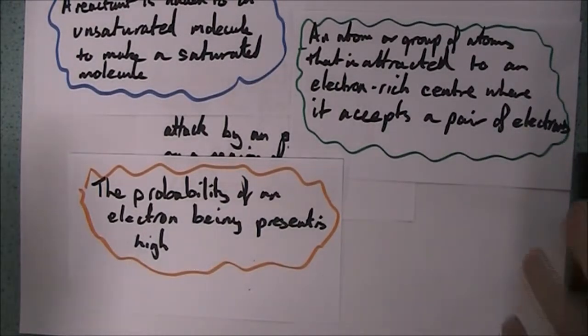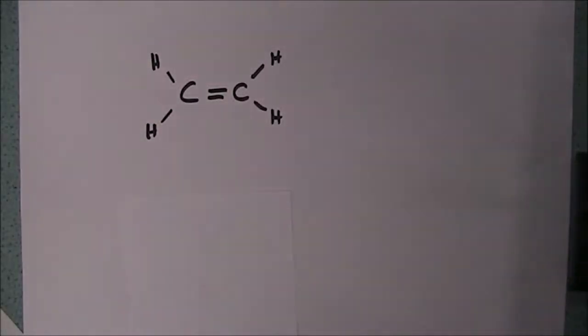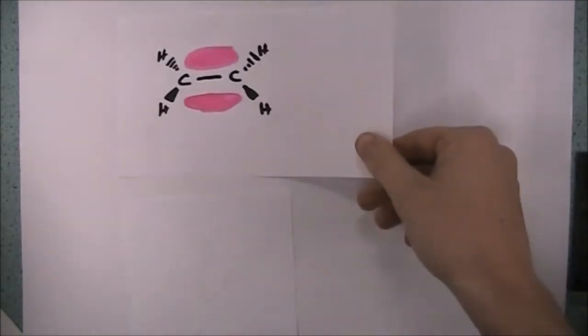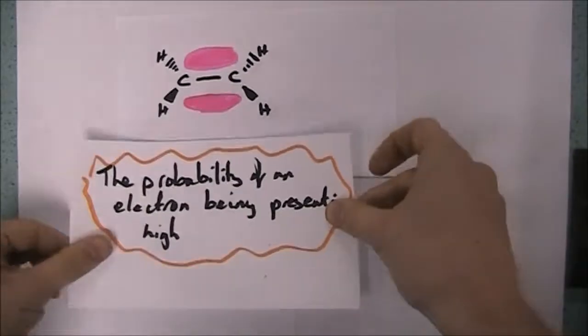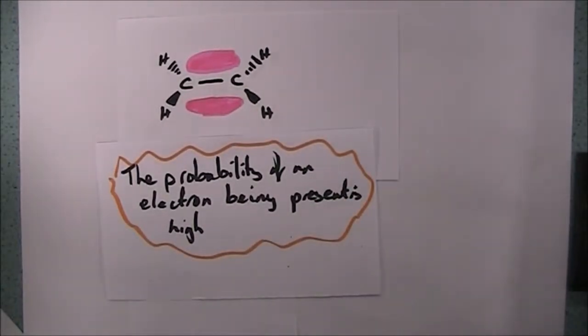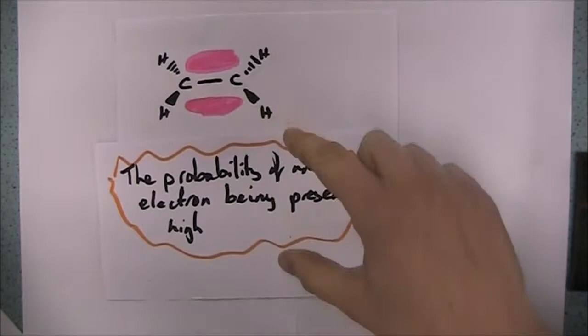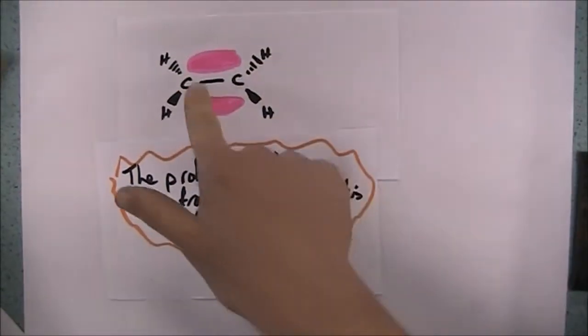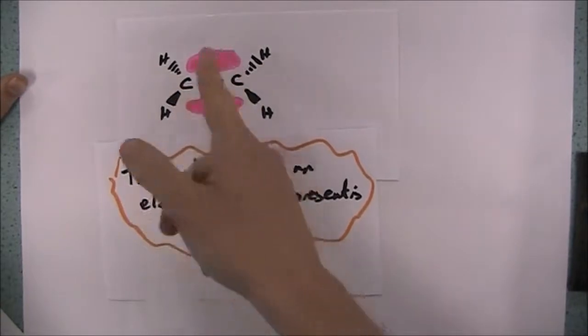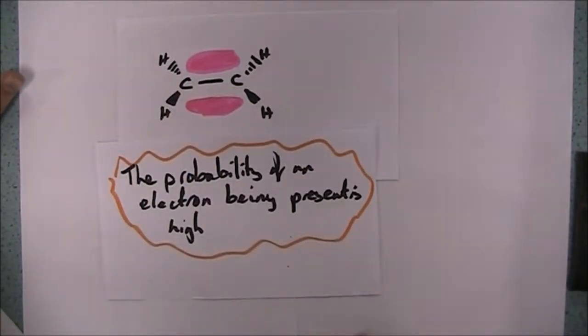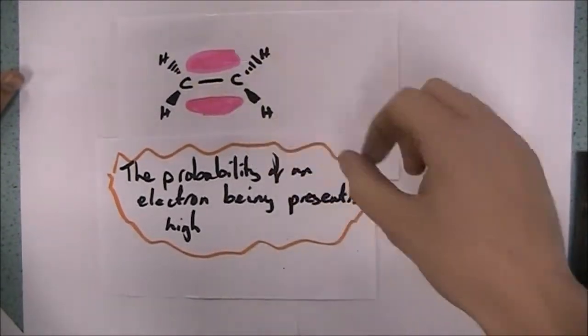So we're going to look at this in the context of alkenes. Here's a molecule of ethene, or at least here's a displayed formula of ethene. We know, of course, that it's not quite an accurate representation because what we have really is we have a sigma bond and a pi bond where our double bond is. We are looking for the probability of an electron being present being high because without that we can't have an area of high electron density. And high electron density in an alkene happens in the double bond. We have the sigma bond in the middle and we have the pi bond above and below the plane of the molecule. And the probability of us finding an electron in the region in between the carbon atoms here and here is actually relatively high. So we have an area of high electron density.